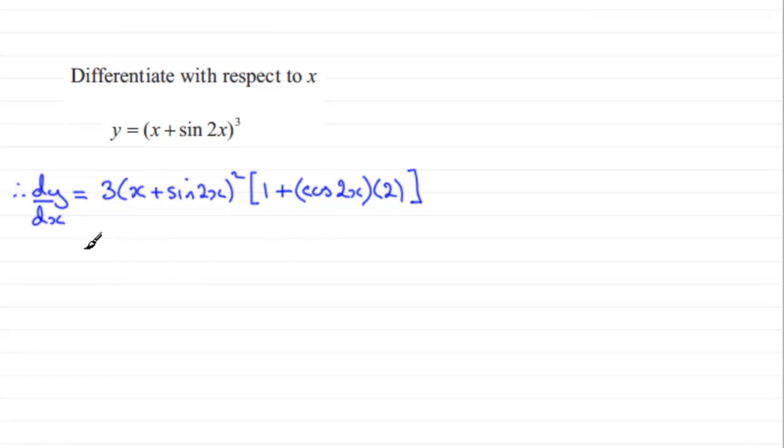What I need to do though is just tidy this up. And so I'm going to copy the first part down, 3 multiplied by x plus sine 2x, all squared. And then for this part here, I'm going to just call it 1 plus, and put the 2 in front of the cos 2x. So we get 2 cos 2x. And that's it. So that's the quick way. That's doing it just straight off.